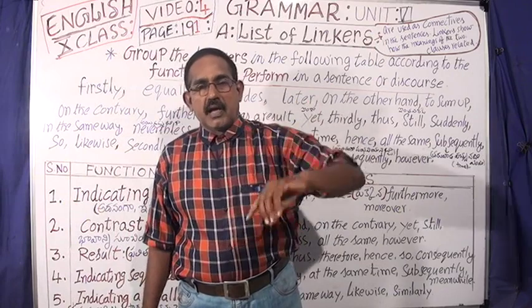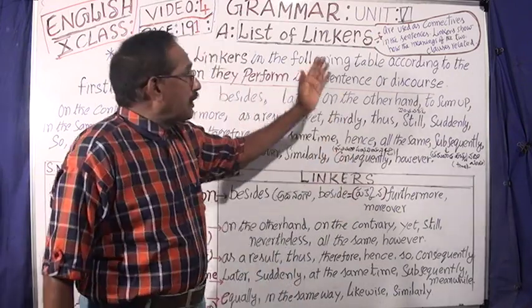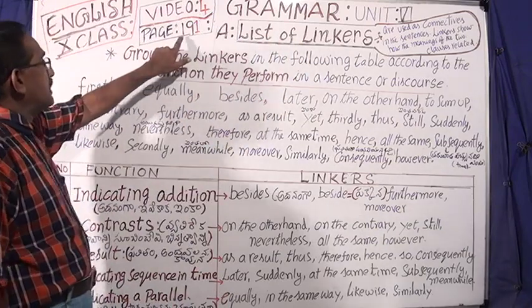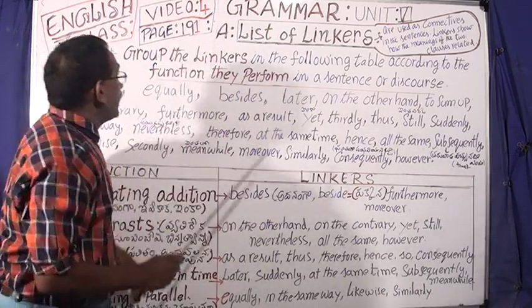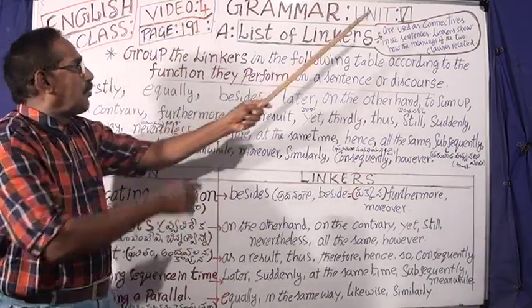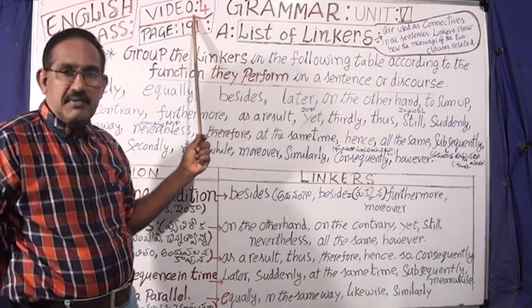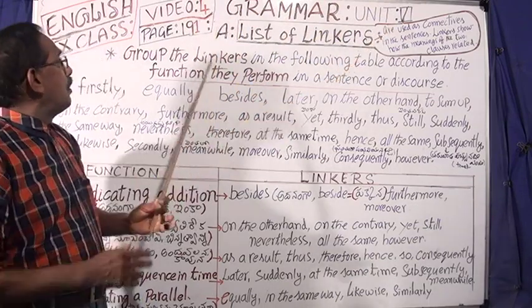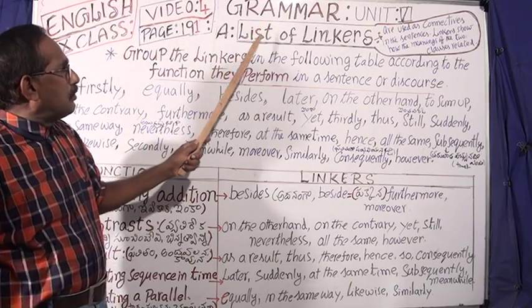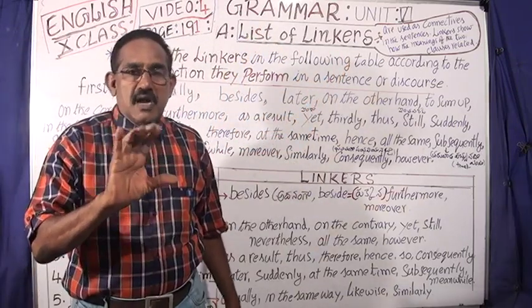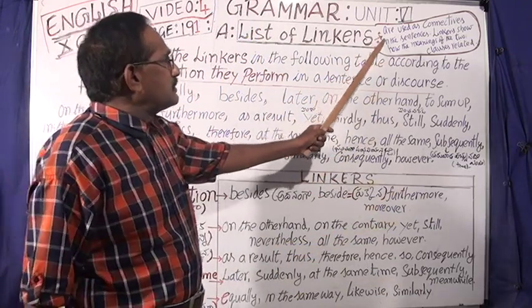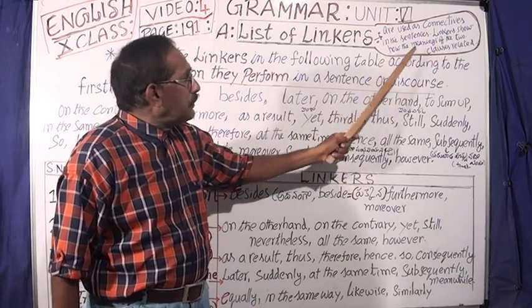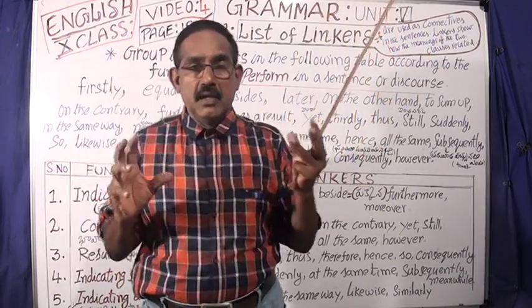We are going to make a video about a grammar topic. In this video, we have a list of linkers. We have page number 191. This is video number 4. In this video, we have a textbook. There is a list of linkers. It is a grammar topic. Linkers are used as connectives in the sentences. Linkers show how the meanings of the two clauses are related.